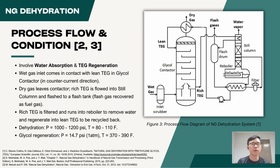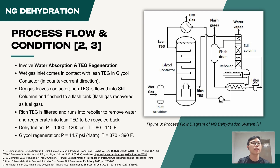The dry gas leaves the contactor for further processing, while the rich glycol is flown into the still column to be heated, then flashed through the flash drum to recover flash gas as fuel gas. The remaining rich TEG is then cooled and filtered before the water content is removed by the reboiler heat in the still column. The regenerated lean TEG is then recycled back for the next dehydration cycle.